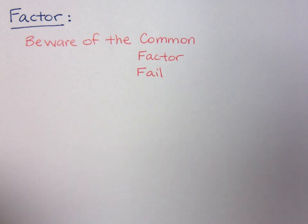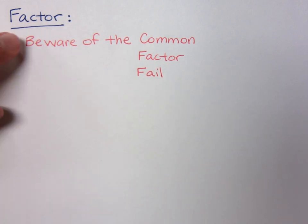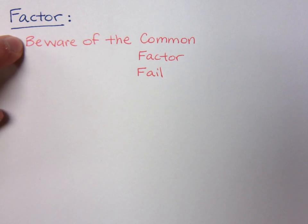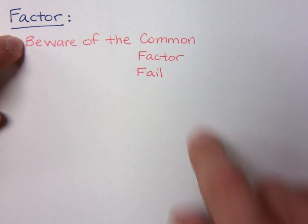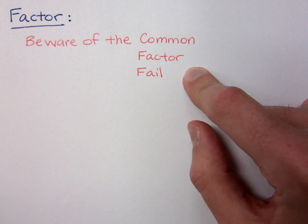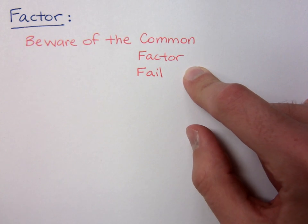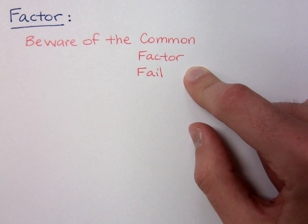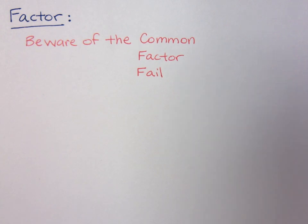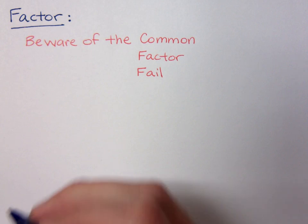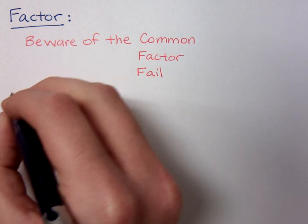In this video, we want to look at factoring trinomials. We want to be careful about the common factor fail. What the common factor fail is, is when you have one of your binomial factors that contains a common factor. We shouldn't really have that, because the first step in all factoring problems is to look for your greatest common factor.